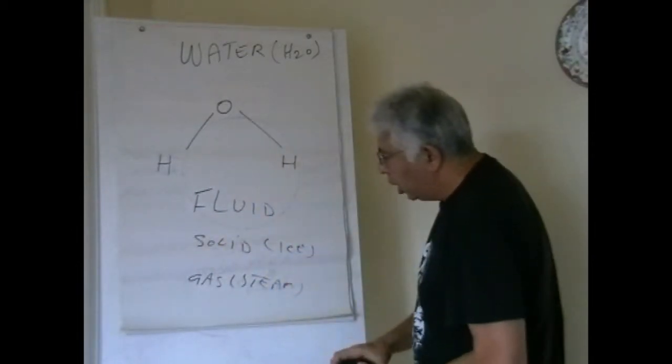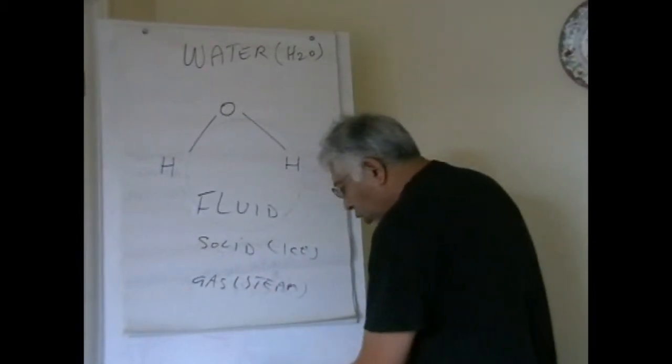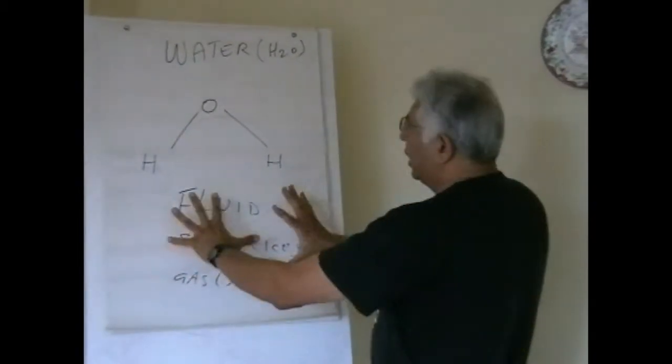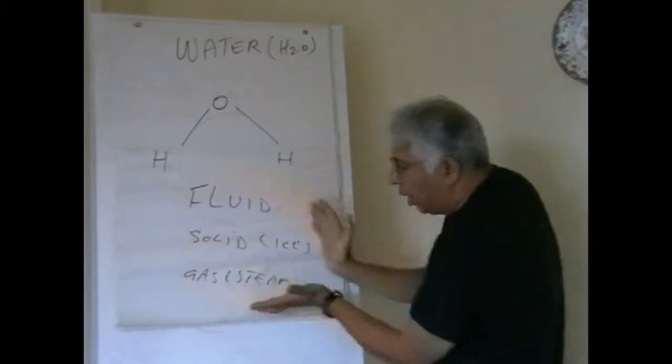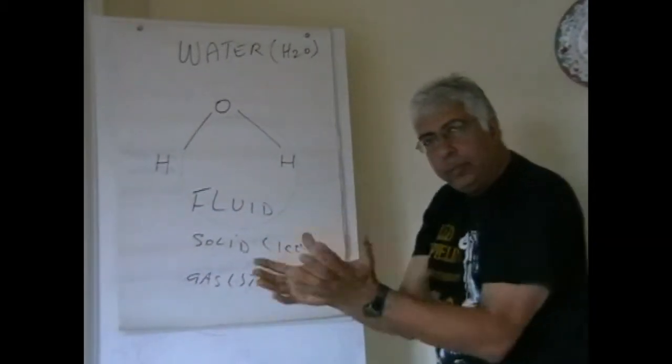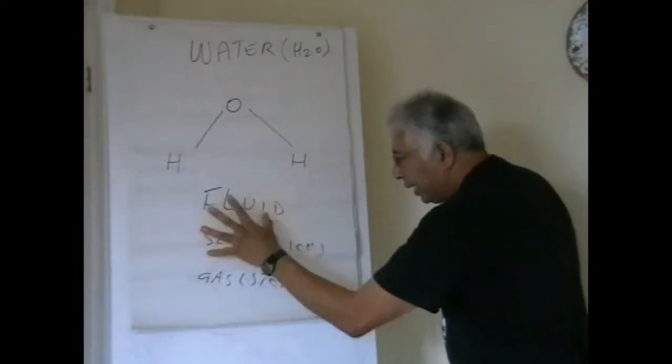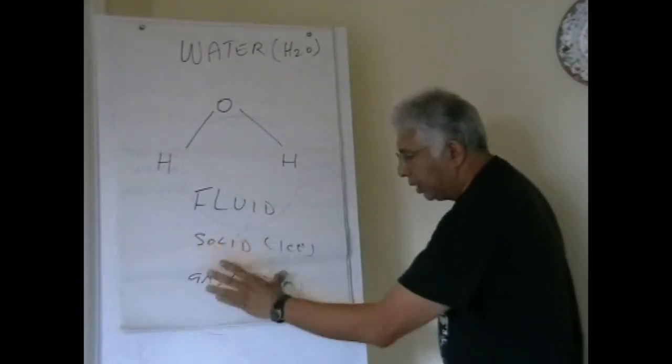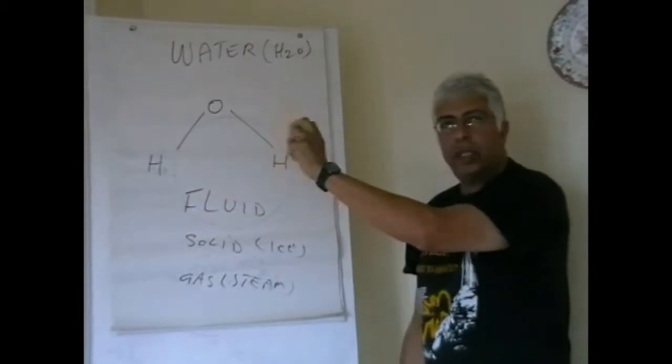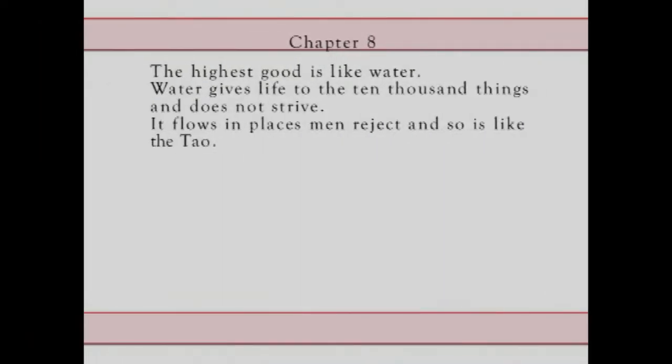So in the Dao De Jing, water is the closest thing to the Dao because at very simple room temperature with no sophisticated equipment, you can make gas, you can make solid which is ice, you can make steam, and it can be fluid at the same time.